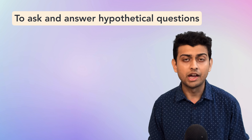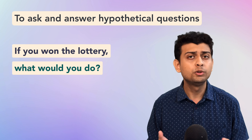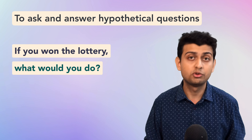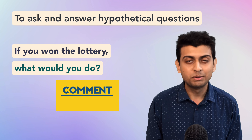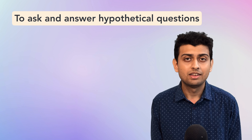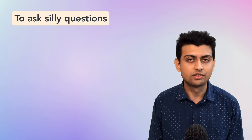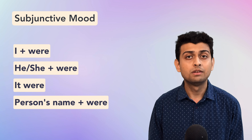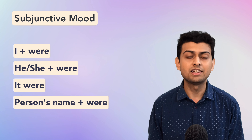Sometimes we want to ask and answer hypothetical questions — in such cases we also use the second conditional. 'If you won the lottery, what would you do?' It's hypothetical because we don't know if you'll win a lottery. To answer: 'If I won the lottery, I would buy a new car.' We also use the second conditional for rather silly questions like: 'If you could have a superpower, what superpower would you have?' or 'If you were an animal, what would you be?' Notice we use 'were' with subjects where it normally would not go — this is the subjunctive mood, a characteristic of the second conditional.